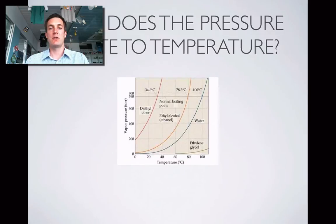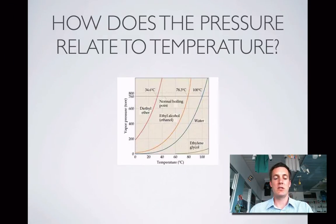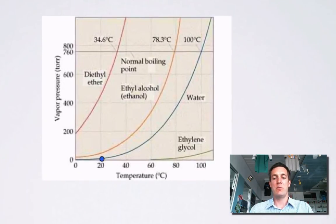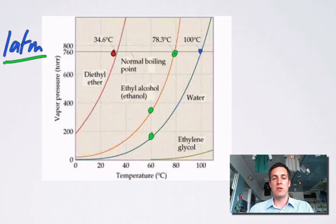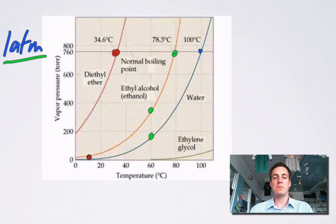Here are a few graphs showing the vapor pressures of different liquids at different temperatures. If we look at water, its vapor pressure gradually rises as temperature rises, and at 100 degrees centigrade it reaches one atmosphere or 760 torr. Ethanol at 60 degrees has a higher vapor pressure than water, and at 78 degrees it starts to boil as its vapor pressure reaches one atmosphere. Diethyl ether, which boils at 34.6 degrees, has a much higher vapor pressure than the other two at any particular temperature. So the lower the boiling point of a liquid, the higher its vapor pressure at any particular temperature, and with all these liquids the vapor pressure rises as temperature rises.